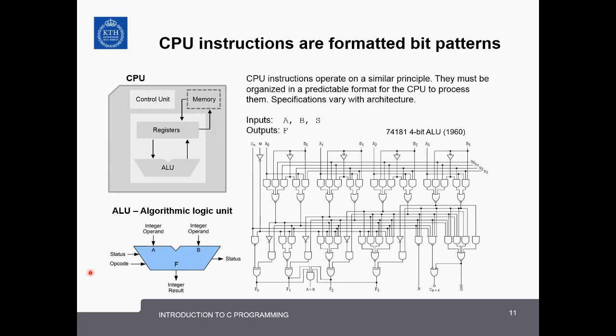The instructions for a CPU are simply patterns of bits or binary numbers formatted in a particular way and then run on computer hardware. The CPU, remember that the algorithmic logic unit is the heart of the CPU. It's a digital circuit that performs algorithmic and bitwise logic operations on binary numbers. It takes a formatted pattern of binary numbers transmitted through a digital circuit as input and it performs the operation you request and returns the output also as a binary number. This is the schematic for a 74181 4-bit algorithmic logic unit with 75 logic gates designed in 1960.